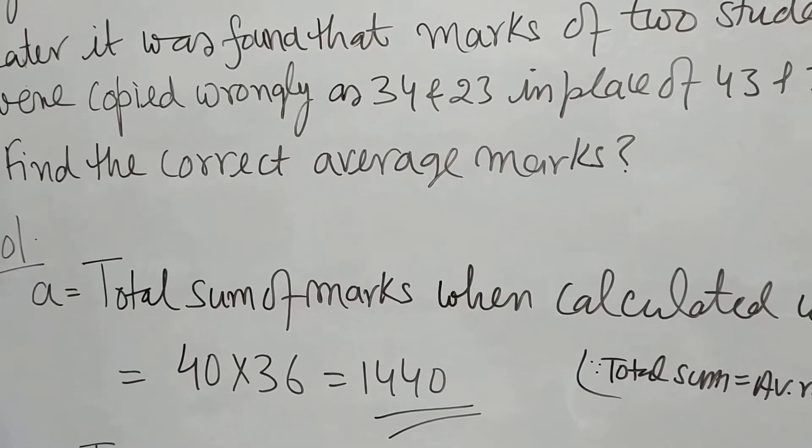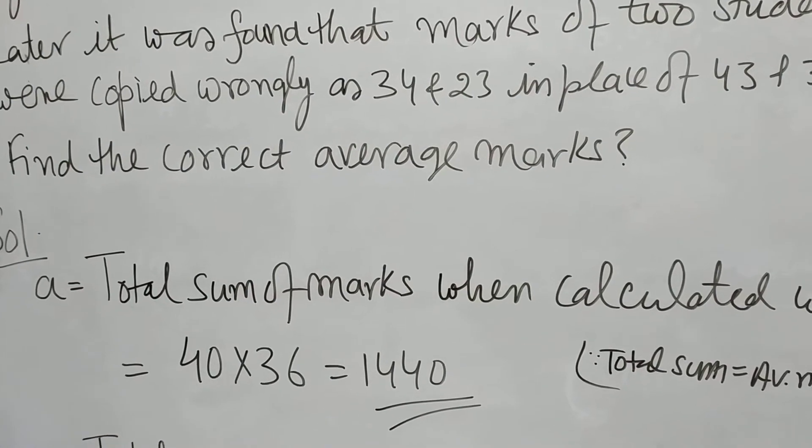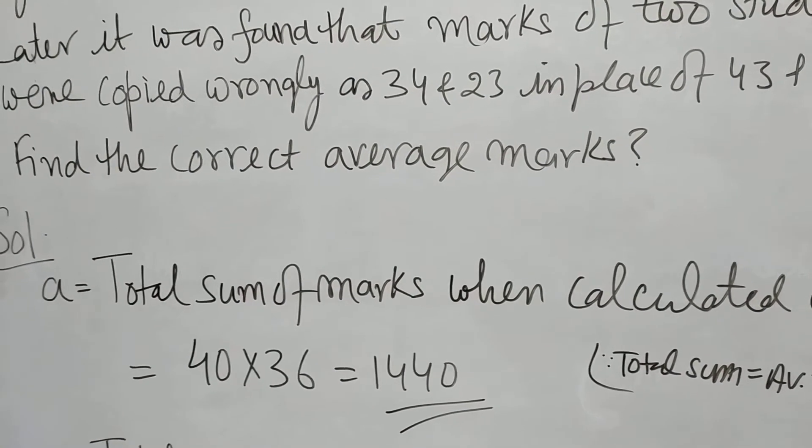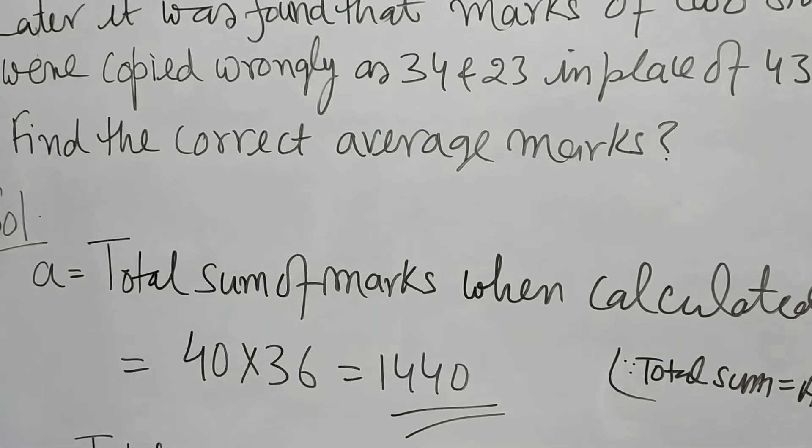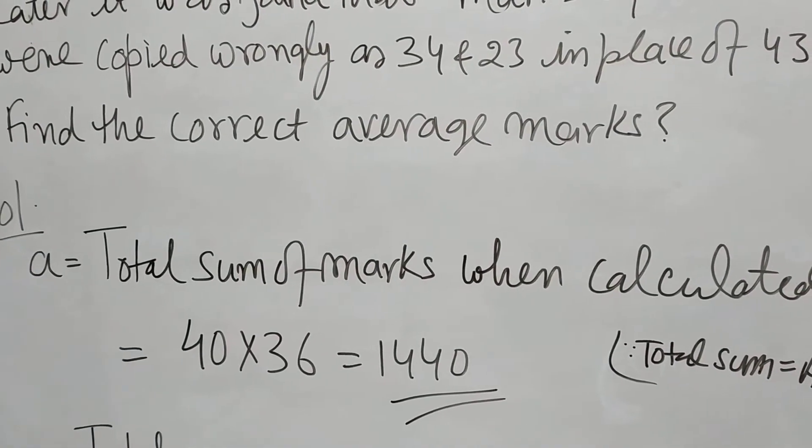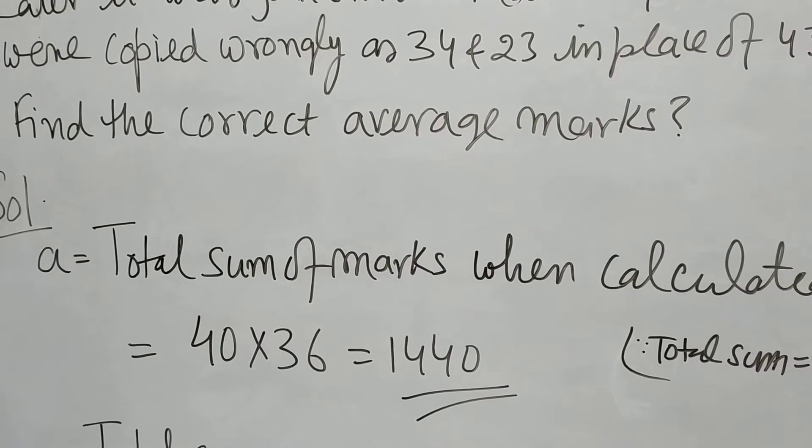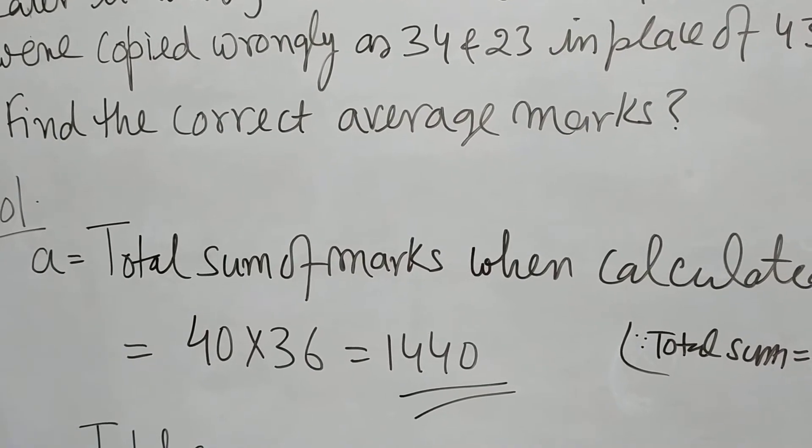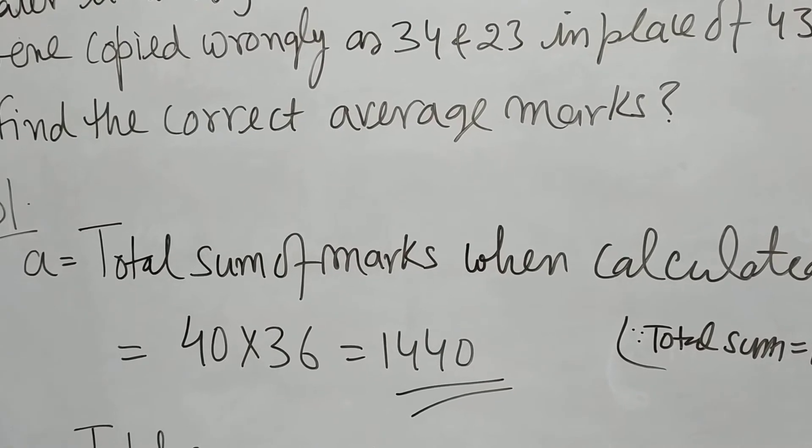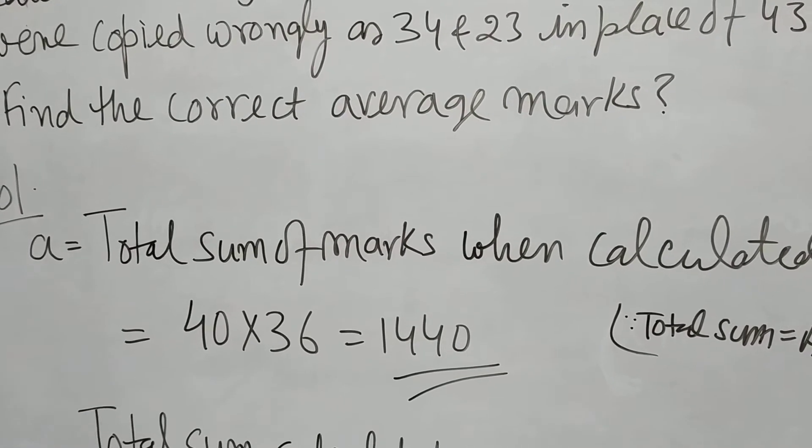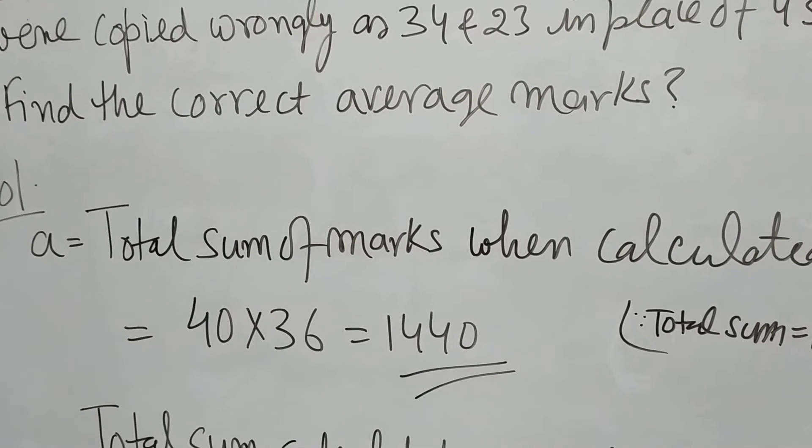Average marks calculated were 36, and the students who appeared in exam were 40. So the wrongly calculated sum was 36 times 40 equals 1440.